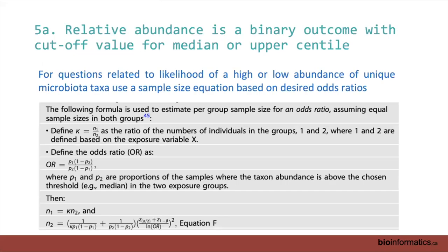Another way to perform a sample size calculation for relative abundance is to convert it into a categorical variable — abundance higher or lower than the median, or in the upper centile range — giving you two groups. You can then determine the likelihood or odds of this outcome, and use a sample size equation based on an odds ratio when relative abundance has been converted into a two-category variable.